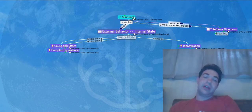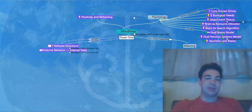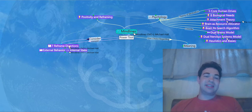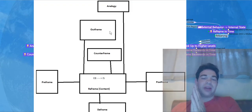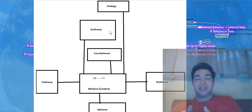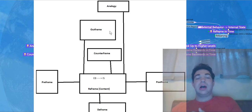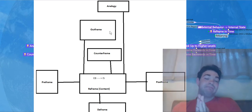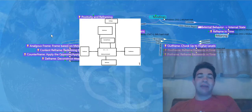So how do you actually begin to change the meaning once you have the belief stated as external behavior means internal state? There are actually seven separate directions you can go to reframe. You can go left — pre-framing. You can go right — post-framing. You can stay right where you are — that's reframing. You can go down — deframing. And then there are three meta levels: counter-framing, out-framing, and analogy, which is really going up the stack. Let's dive right in.